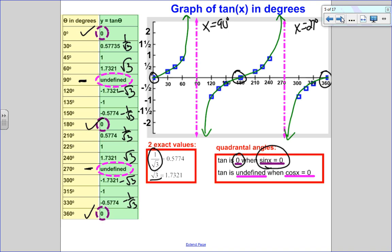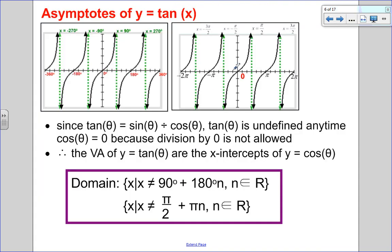Looking at the graph in degrees and radians side by side, let's talk about the asymptotes. Since tangent is sine over cosine, tangent is undefined any time cosine is 0 because division by 0 is not allowed. Therefore, the vertical asymptotes of tangent are the x-intercepts of cosine. Those x-intercepts start at 90° and happen every 180°, meaning the domain is x ≠ 90° + multiples of 180°, or π/2 + multiples of π.